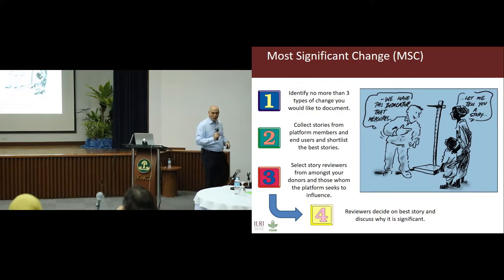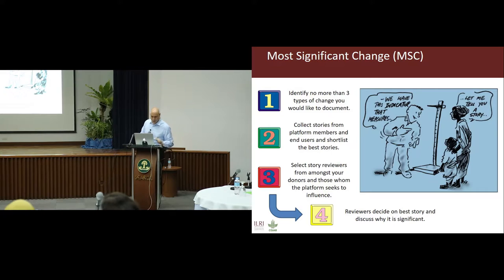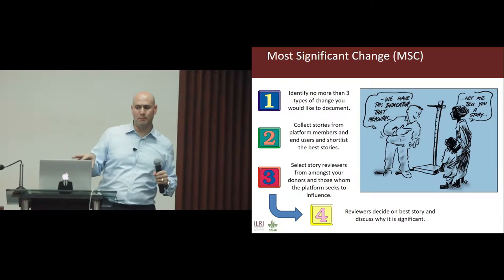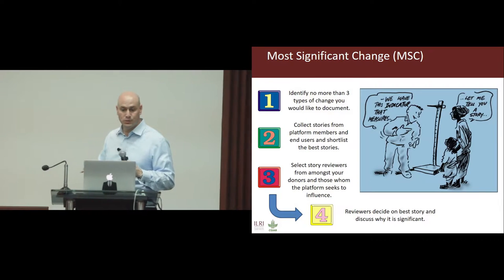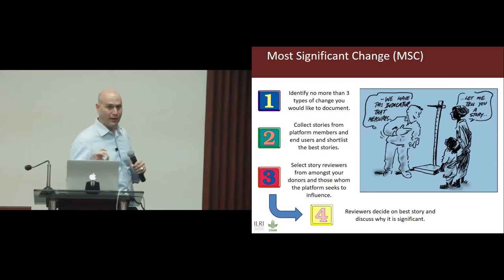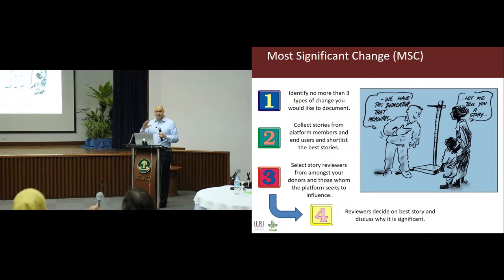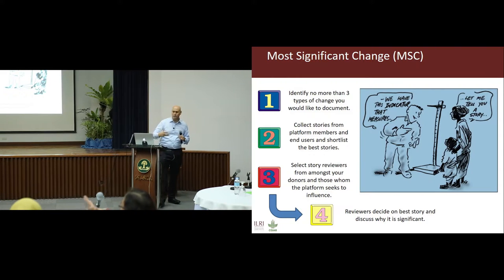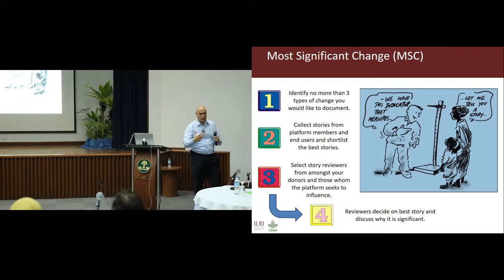Finally, most significant change: you typically identify no more than three types of change that you want to document. Then you collect stories from platform members as well as end users and other stakeholders, and you shortlist the best stories. The story reviewers are taken from among the people you're trying to reach or influence — it can be your donors, it can be your target audience. Those stories are then taken forward to help both document the change and influence future change.